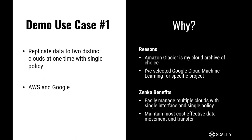In demo use case number one, I'm going to replicate data to two distinct clouds at one time with a single policy — Amazon Web Services and Google. Why would you want to do this? Let's say I've chosen Amazon Glacier as my cloud archive of choice and I want to continue that, but for a current or future project I've selected the Google Cloud Machine Learning Service. I want to send some data to Glacier to continue archiving it, but also some data to Google so I can use the Cloud Machine Learning Service. With Zanco I can easily manage these multiple clouds with a single interface and a single policy.